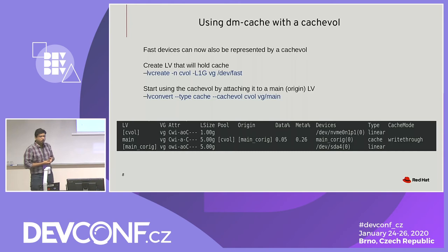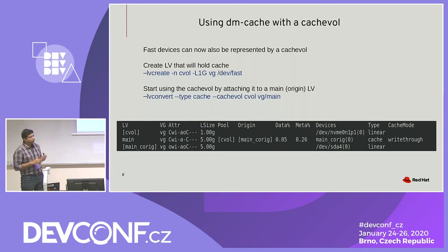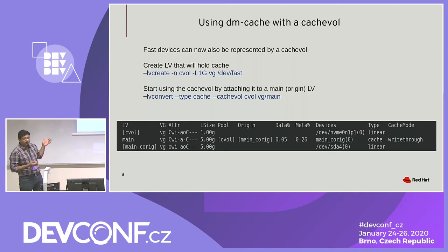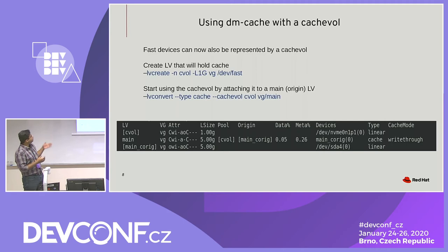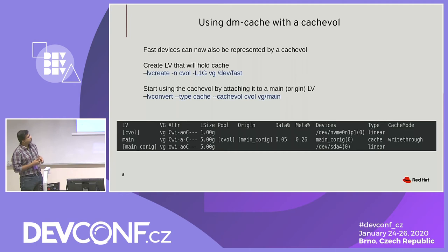We also have cache vols now. Cache vols can be thought of as cache pools without user-accessible data or metadata — you would never see metadata or data logical volumes even running LVS -a. The metadata and data are combined into one internal logical volume used by the cache vol. The way to create it is pretty much the same, just specifying a cache vol instead of a cache pool in the command.